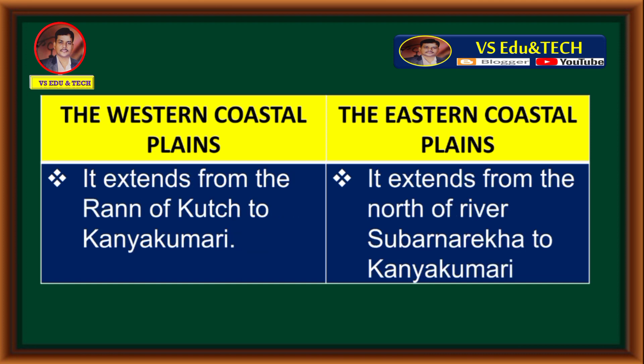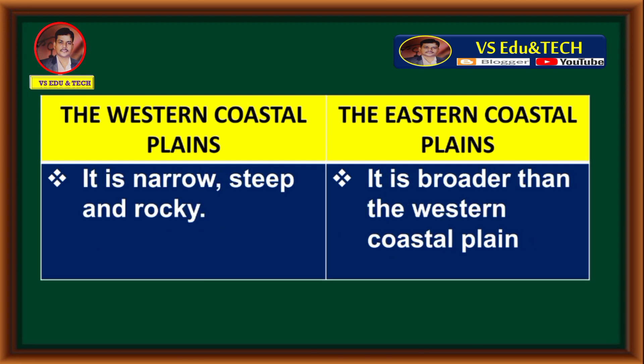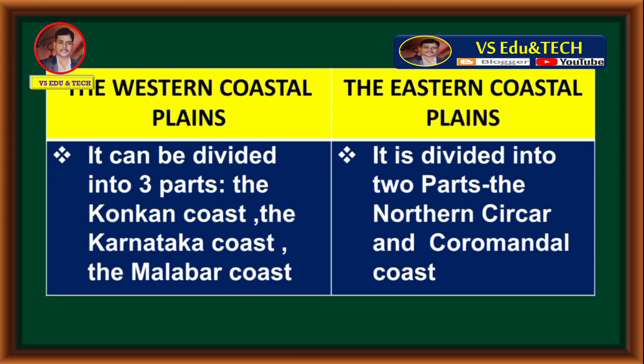The western coastal plain extends from the Rann of Kutch to Kanyakumari, while the eastern coastal plain extends from the north of the river Subarnarekha to Kanyakumari. The western coastal plain is narrow, steep, and rocky, whereas the eastern coastal plain is broader. The western coastal plain is divided into three parts — the Konkan coast, the Karnataka coast, and the Malabar coast — while the eastern coastal plain is divided into two parts: the Northern Sarkar and the Coromandel coast.